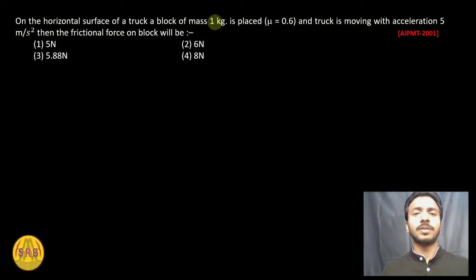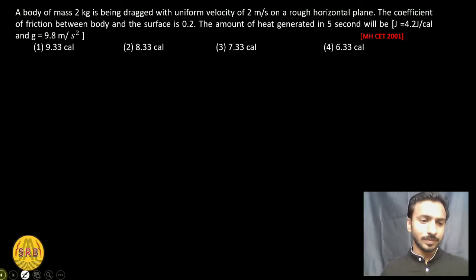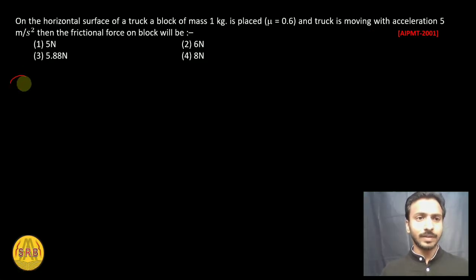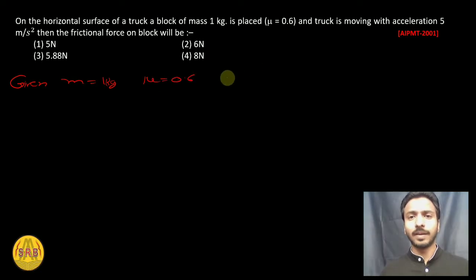The given values are: m is equal to 1 kg and mu is equal to 0.6, acceleration a value is 5 meter per second square. We have to find the friction force. So we have to draw the diagram.